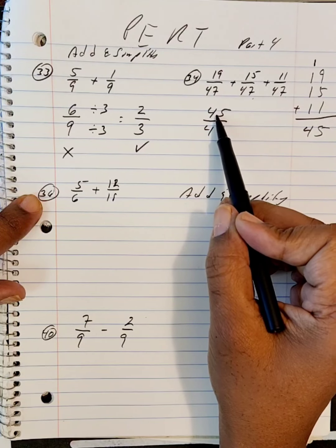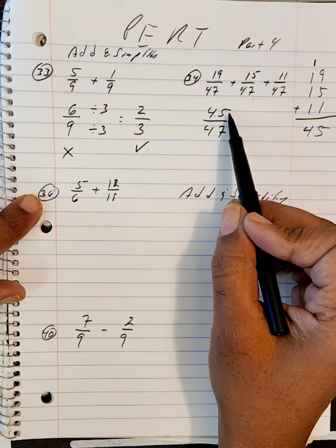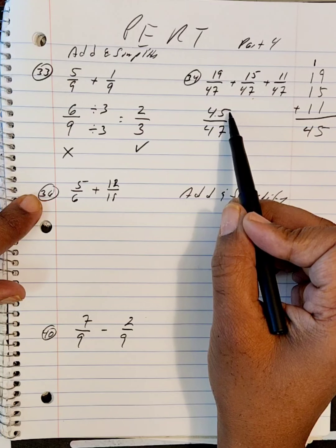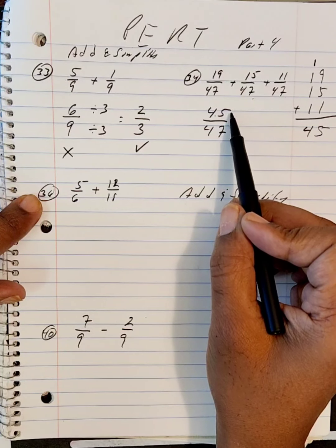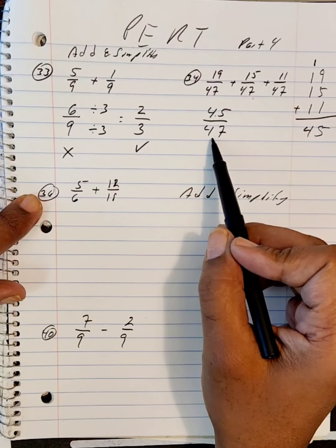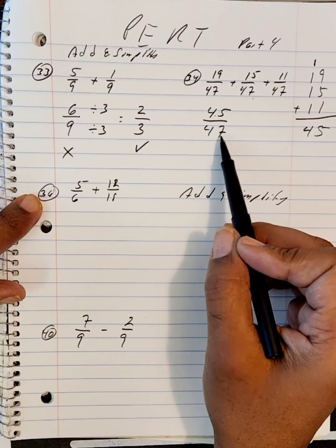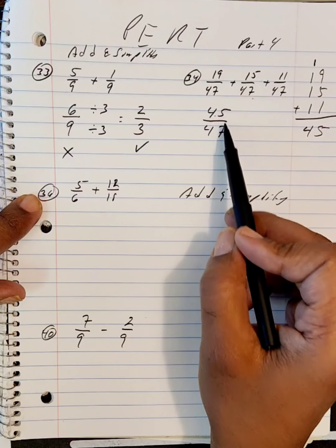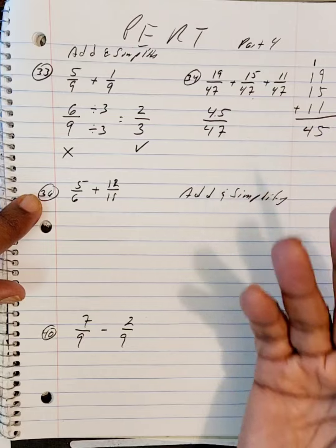So we will get 45 over the same denominator of 47. Now, there are many numbers that can divide 45: there's 5 and 9 and also 45. But the numbers that divide 47 are only 1 and 47. So there are no common numbers that will divide both, so it's simplified.